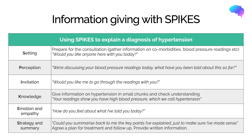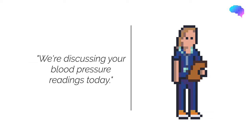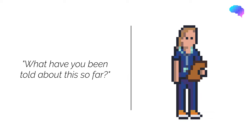Here's an example of how we could use the SPIKES structure when explaining a diagnosis of hypertension. Starting with setting, this involves preparing for the consultation, gathering information on the patient such as their comorbidities and blood pressure readings, and establishing whether the patient would like anyone with them. We then move on to establish the patient's perception — what do they understand by what's going on? For example, you could say: 'We're discussing your blood pressure readings today. What have you been told about this so far?'